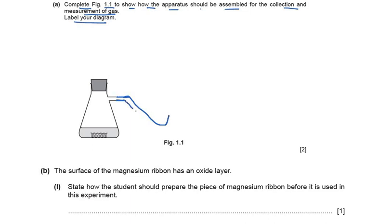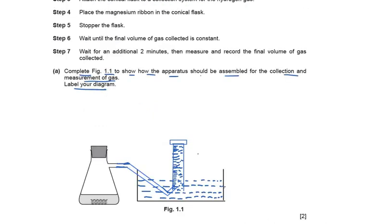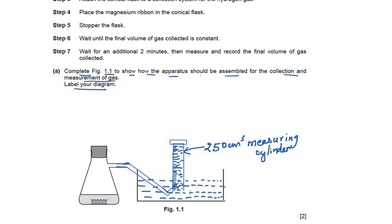We need to draw a delivery tube and a measuring cylinder in a trough of water. Here is the diagram drawn — we label it as a 250 cm³ measuring cylinder. We must ensure all apparatus is sealed: the conical flask is sealed, the tube is fully connected with no gaps, and the tube inside the water is fully dipped.